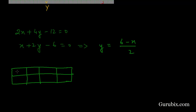Here is x and here is y. If x equals to 0, then y is 3. If x equals to 2, then y equals to 2. And if x equals to 4, then y equals to 1.